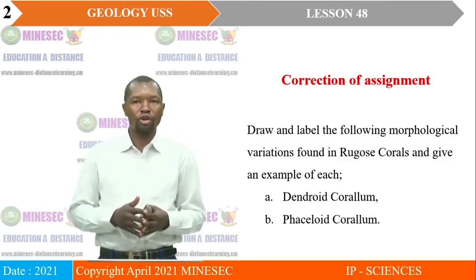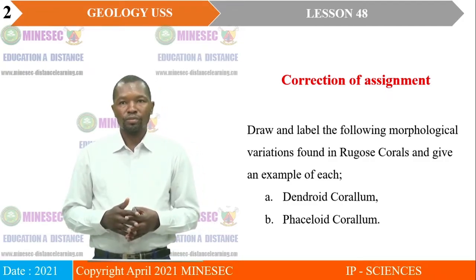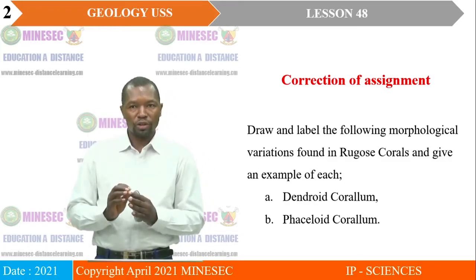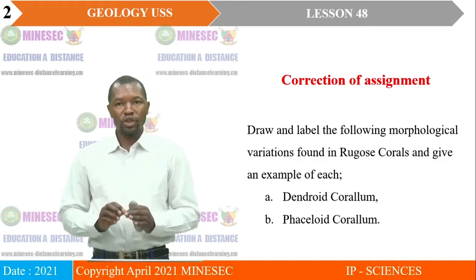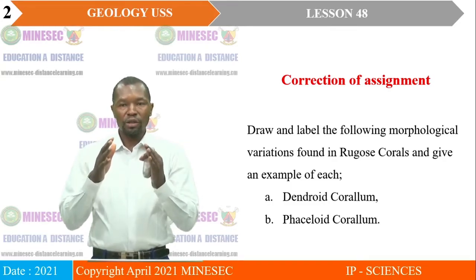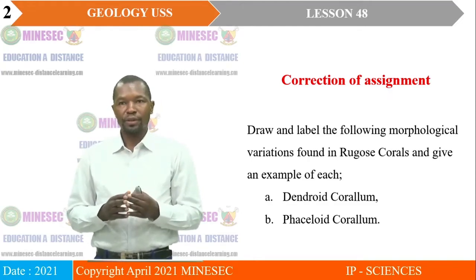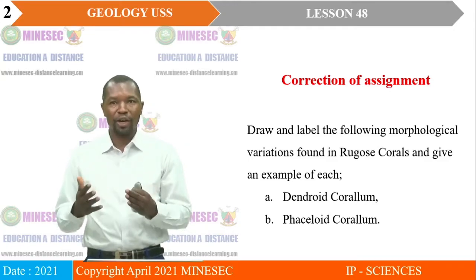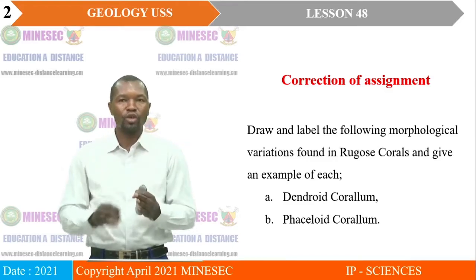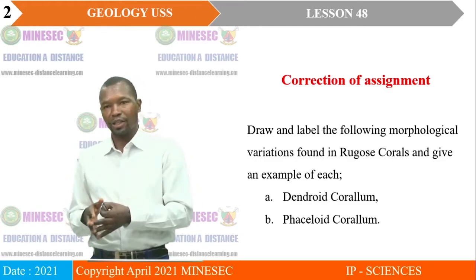They include Dendroid Coralum and Phasanoid Coralum. If we carefully look at the assignment, there are two aspects you have to draw and label. Remember that in paleontology, labels must be diagnostic. That is why when we say draw and label diagrams, it's not just to draw and give the meaning of the parts, but those parts that will be able to diagnose what the phylum is, which class it is.